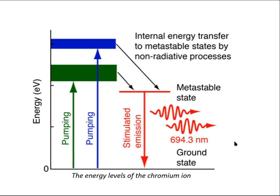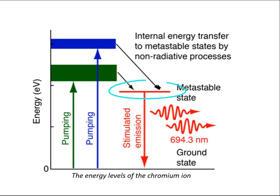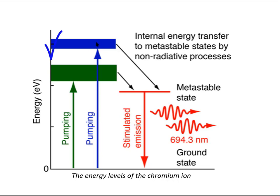The laser emerges from the side with the 95% reflecting end. The energy levels of the system are shown in this figure. The two broad levels have a lifetime of about 10 nanoseconds, whereas the narrow level is a metastable state with a lifetime of 3 milliseconds. As the xenon flash tube is fired by discharging a capacitor, the chromium ion in its ground state can absorb green photons with wavelength of 660 nanometers or blue photons of wavelength 400 nanometers, making a transition to one of the states in the respective band.